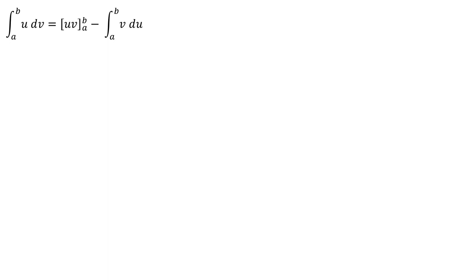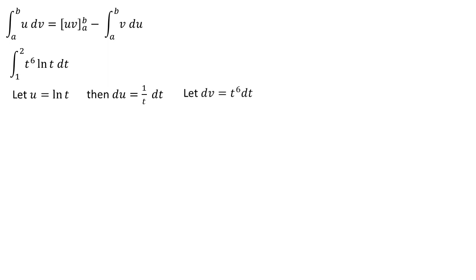Let's do the problem: the integral of t to the power of 6 times ln(t) dt from 1 to 2. Let u equal ln(t), so du equals 1 over t dt. Let dv equal t to the power of 6 dt, so integrating gives v equal to t to the power of 7 over 7.